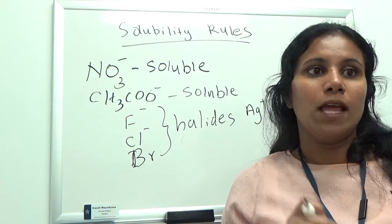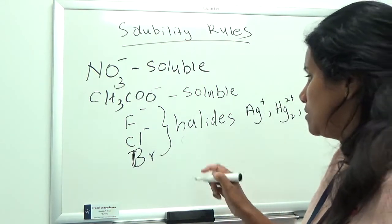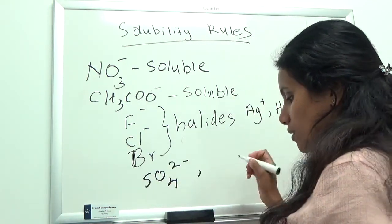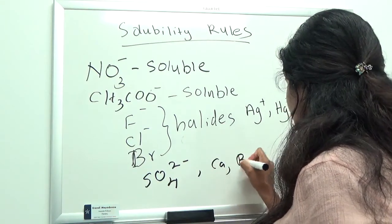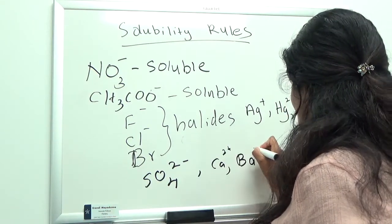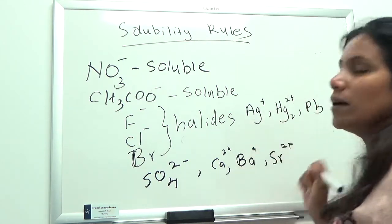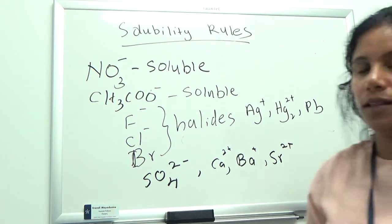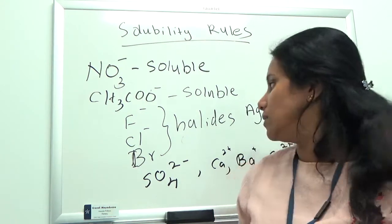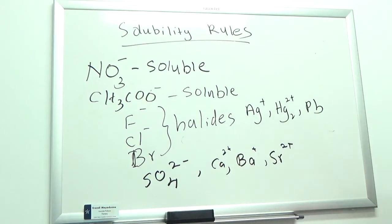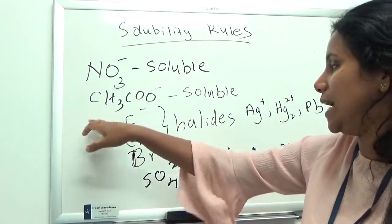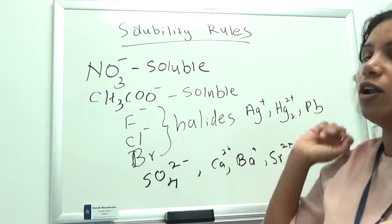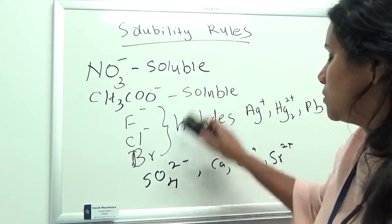Another generally soluble anion is sulfate (SO4²⁻), except for compounds with calcium, barium, strontium, silver, mercury, and lead. So these are the soluble anions: nitrate, acetate, chloride, bromide, and sulfate — all generally soluble, with those noted exceptions.